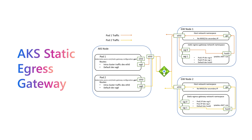You'll learn about AKS Static Egress Gateway, the AKS add-on that enables each application within the cluster to have its own static public IP address that will be used for the egress traffic. This is useful when you want your partner or your customer to be able to whitelist the IP addresses of your application.